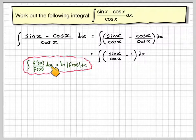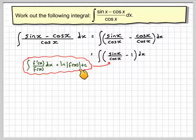So f dash of x over f of x dx is ln of the absolute value of f of x plus c.